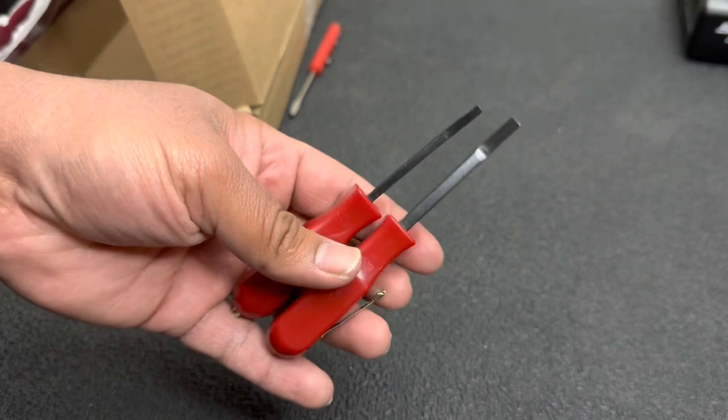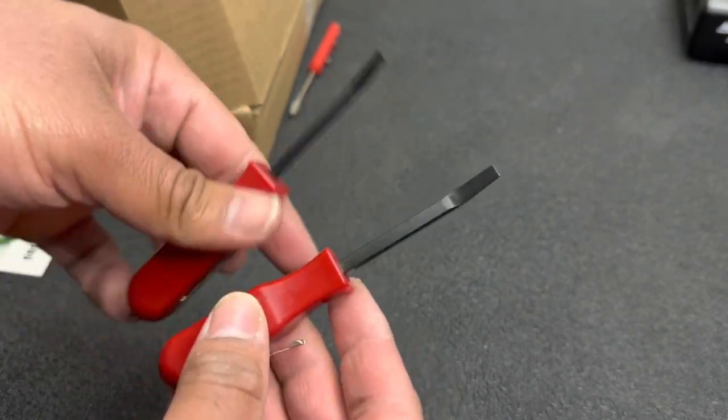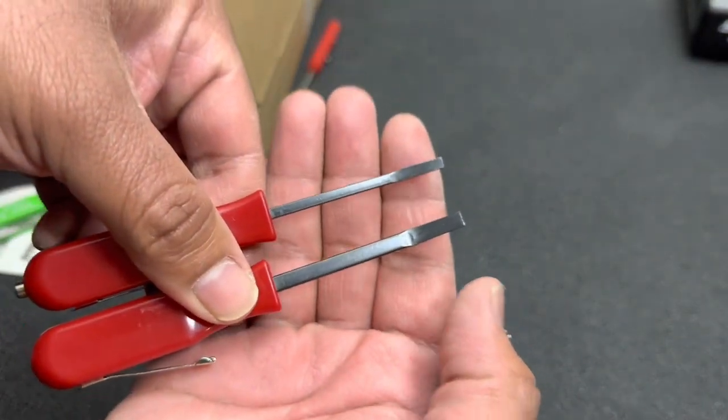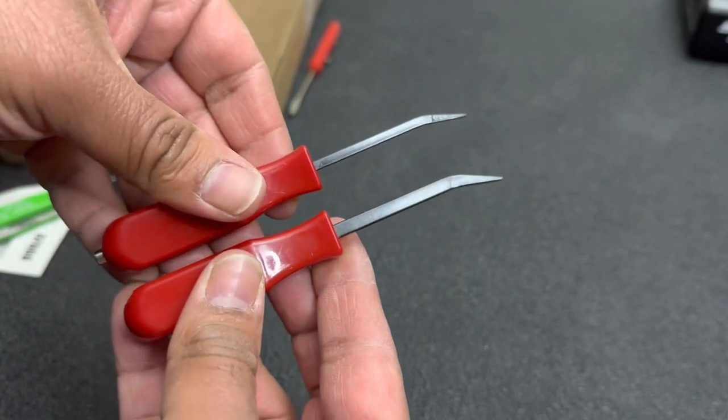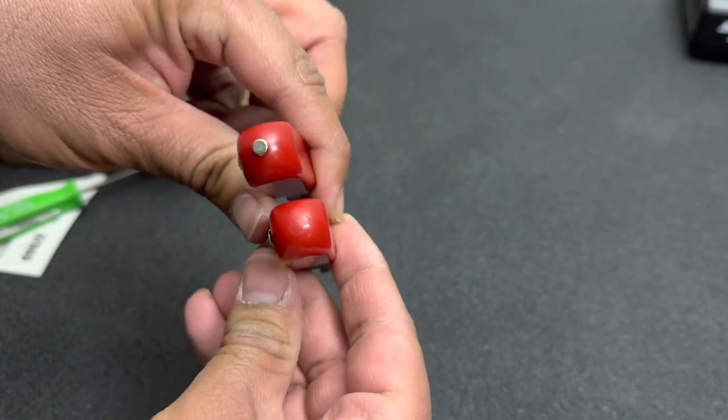Alright guys, so these are the pocket pry bars out of the package. As you can see, you get one with a thinner shank and one with a thicker one. Give you a look at the side profile there, and it looks like only one of them comes with a magnet.